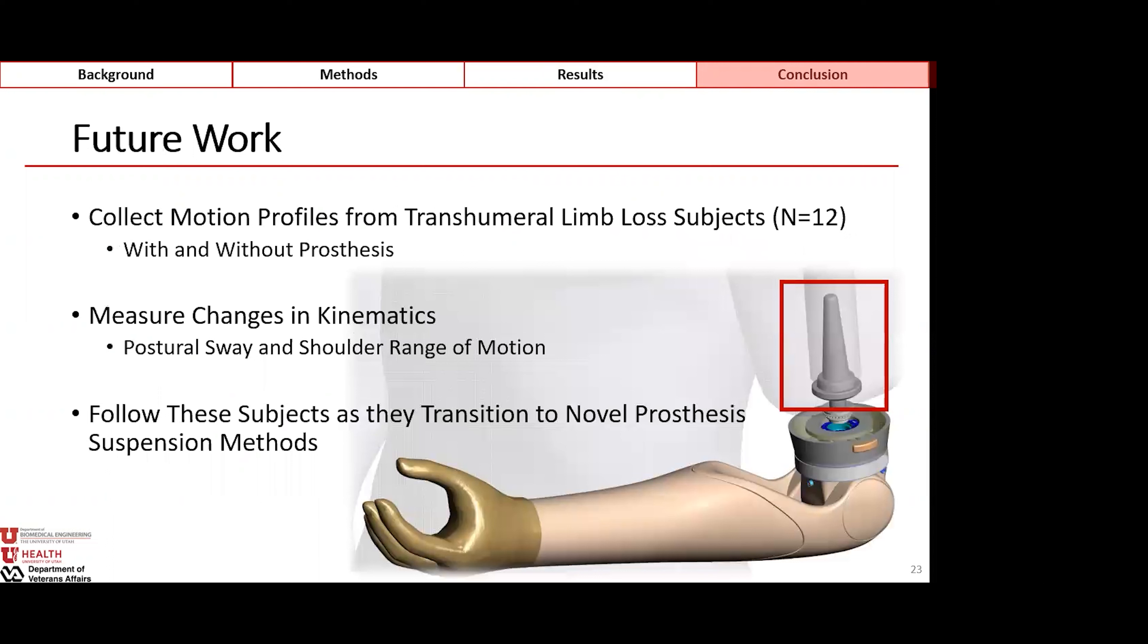In the future, as we're moving forward and hopefully seeing subjects again, we will be collecting these motion profiles from transhumeral limb loss subjects, both with and without their prosthetic device. We will also be measuring the changes in kinematics that occur, such as postural sway and the active range of motion in their shoulder during all of these activities.